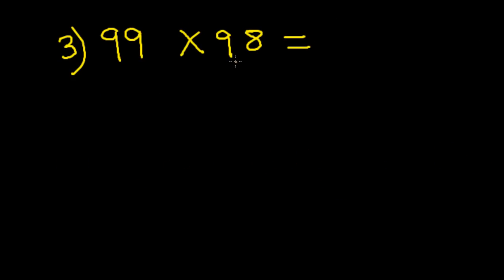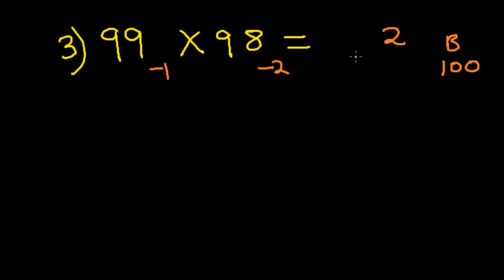Let's try and multiply 99 and 98. Both these numbers are closer to 100, so we take the base as 100. Subtracting 99 from 100 we get minus 1, and 98 minus 100 is minus 2. Now we multiply these two numbers: minus 1 into minus 2 gives 2. Since the base is 100, the product of these two digits should give you 2 digits, so we write it as 02. Now all we do is subtract: 99 minus 2 gives you 97. So the answer is 9702.